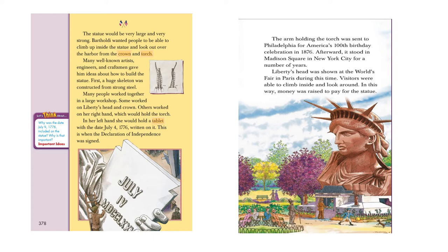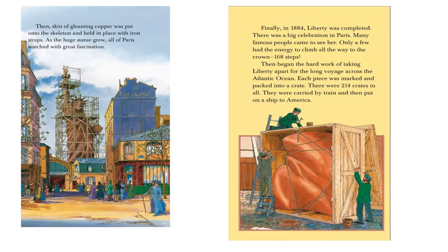The arm holding the torch was sent to Philadelphia for America's 100th birthday celebration in 1876. It stood in Madison Square in New York City for a number of years before putting all the pieces together. Liberty's head was shown at the World's Fair in Paris during this time. When they sent the hand to Madison Square, the head was still in Paris. Visitors were able to climb inside and look around, and in this way money was raised to pay for the statue.